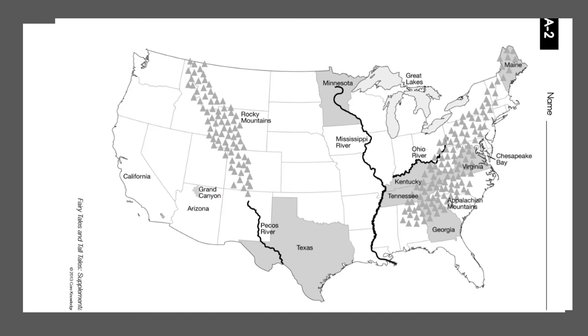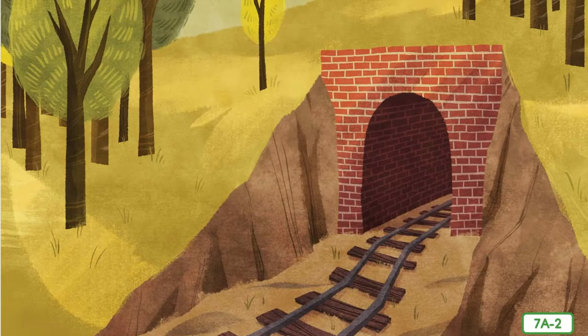Even though there was a real man named John Henry, some of the things that happened in this story are not real and are exaggerations. This story is still considered a tall tale and partly fiction, even though John Henry was thought to be a real person. Like our other stories, we're going to start out with our picture walk — looking at the pictures to make predictions about what might happen in the story.